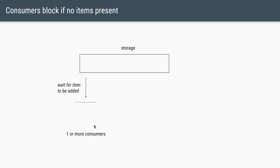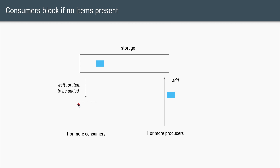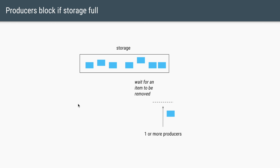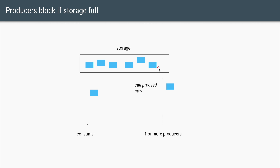If there are no items in the storage area, the consumers will have to wait. Whenever the producer adds an item, the consumer can proceed. Similarly, if a producer is trying to add an item and the storage is full, the producer waits for a consumer to take an item out, freeing up space.